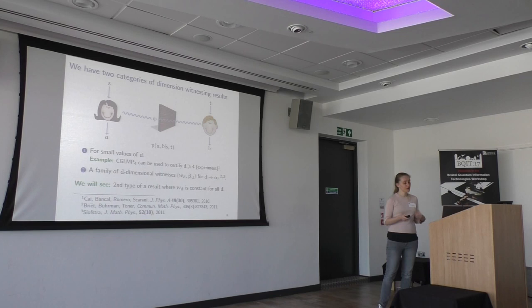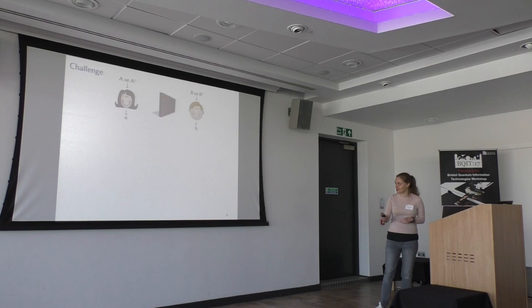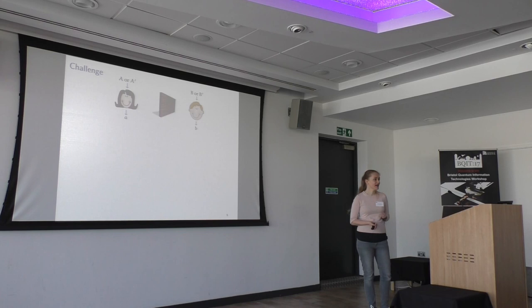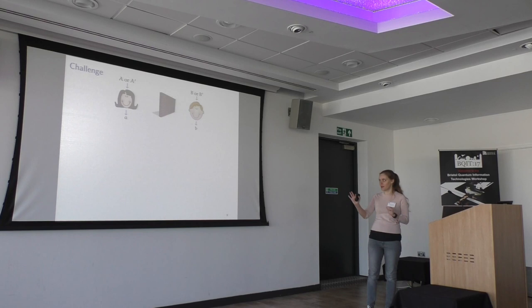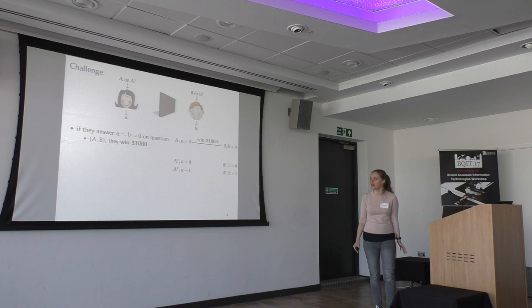Before I get to my dimension witnesses, I will show you a challenge first. We have Alice and Bob — again, we are not letting them communicate. We are going to ask Alice one out of two questions and the same for Bob. We are going to ask Alice A or A prime, and Bob B or B prime. And they will answer with bits — some little a and b.